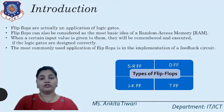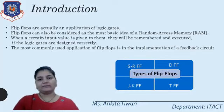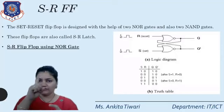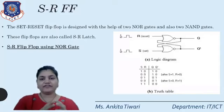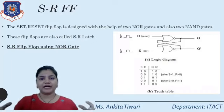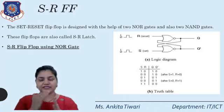Flip-flops are of four types: SR flip-flop, D flip-flop, T flip-flop, and JK flip-flop. We will be studying all four types. A flip-flop stores only one bit — either 0 or 1 — so it is a single-bit memory element. If we want to store four bits, we require four flip-flops connected sequentially together. That concept we will study after the types of flip-flop.